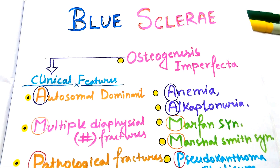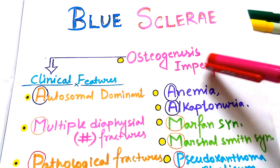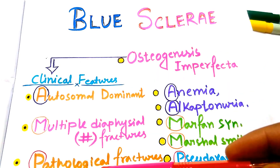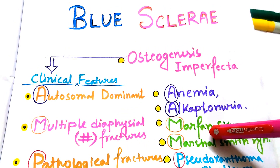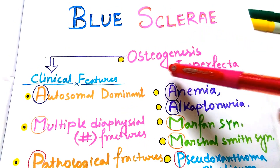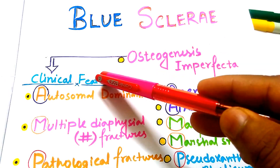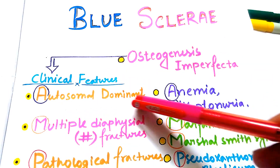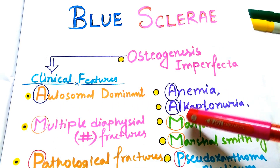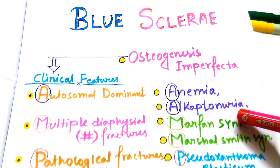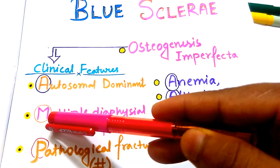In osteogenesis imperfecta, the clinical features form the mnemonic for causes of blue sclera. The condition is autosomal dominant. For A, we can find anemia and alkaptonuria, and there are multiple diaphyseal fractures.